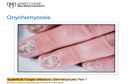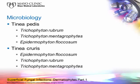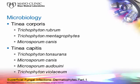Tinea pedis is caused by Trichophyton rubrum, T. mentagrophytes, and Epidermophyton floccosum — the same three cause tinea cruris. Tinea corporis involves the same organisms plus Microsporum canis. Tinea capitis adds T. tonsurans, Microsporum audouinii, and T. violaceum, along with M. canis. You need to be ready to identify whatever organism appears, depending on the patient's history and contacts.